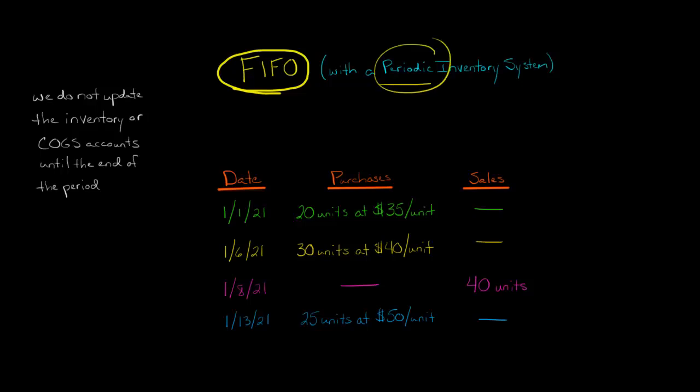So just a quick review, a periodic inventory system means that we don't make any journal entries at all to recognize changes in inventory or cost of goods sold throughout the period. We wait to the end of the period and then we recognize cost of goods sold and inventory.